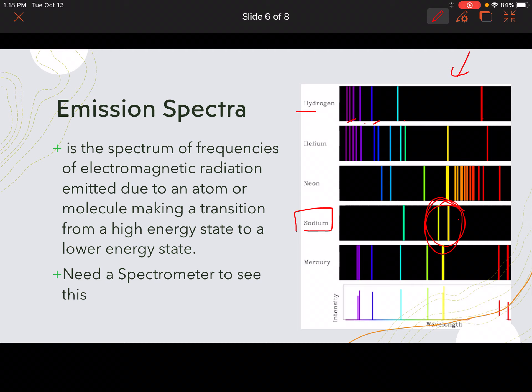Now, in order to see emission spectra, we need a spectrometer. And we are going to do a lab on this. This is going to be lab number five. And we're going to see the emission spectra of various gases.